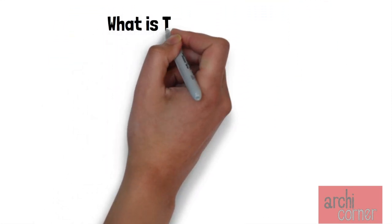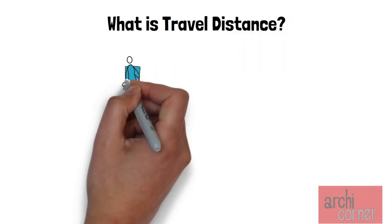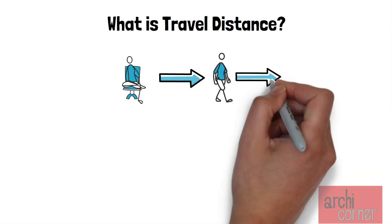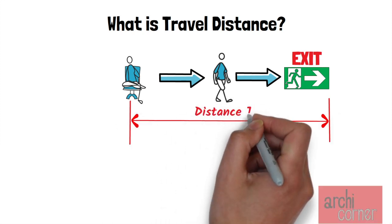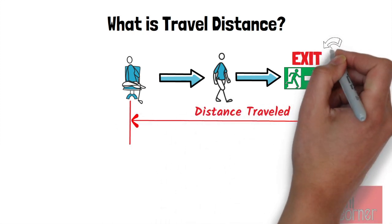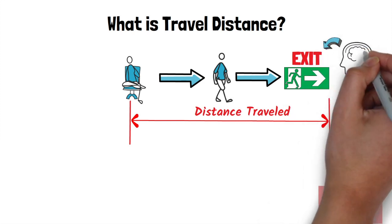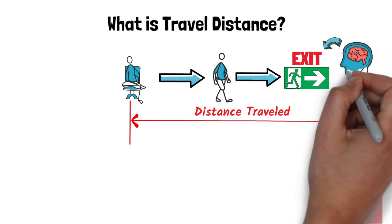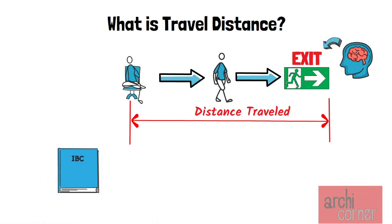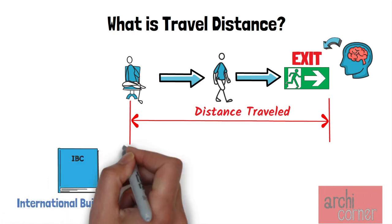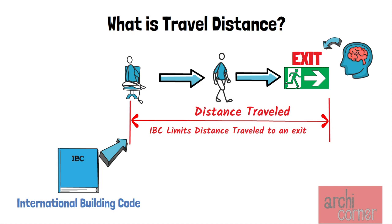Let's talk about what travel distance is. When we are talking about travel distance in architecture, we are normally talking about the distance that it takes a person to go from any portion of space to an exit. The reason travel distance is important is because the IBC, also known as the International Building Code, limits the distance a person can travel to get to an exit.